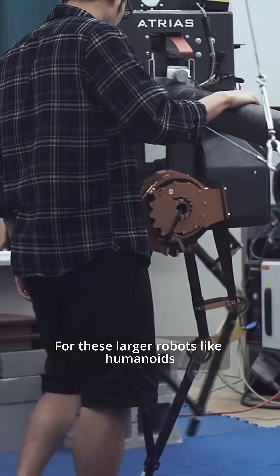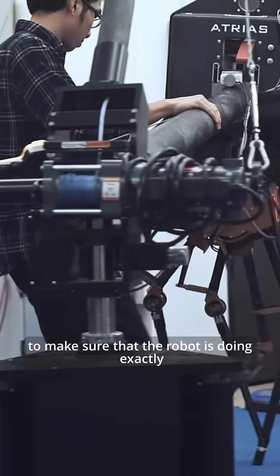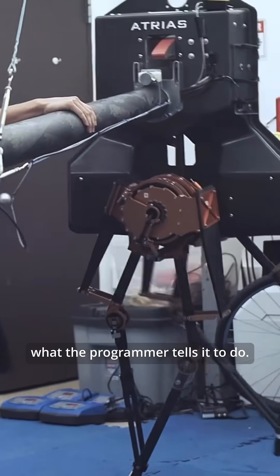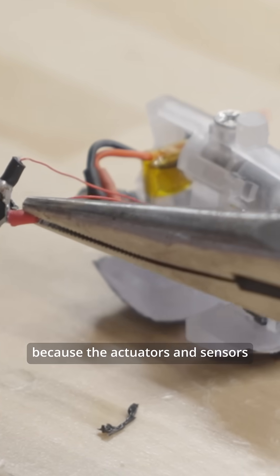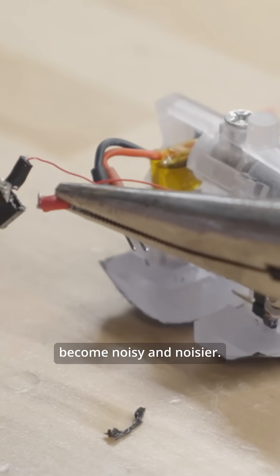For these larger robots like humanoids, we have to have very precise motor control to make sure that the robot is doing exactly what the programmer tells it to do. At the smaller scale, this becomes harder and harder to do because the actuators and sensors become noisier and noisier.